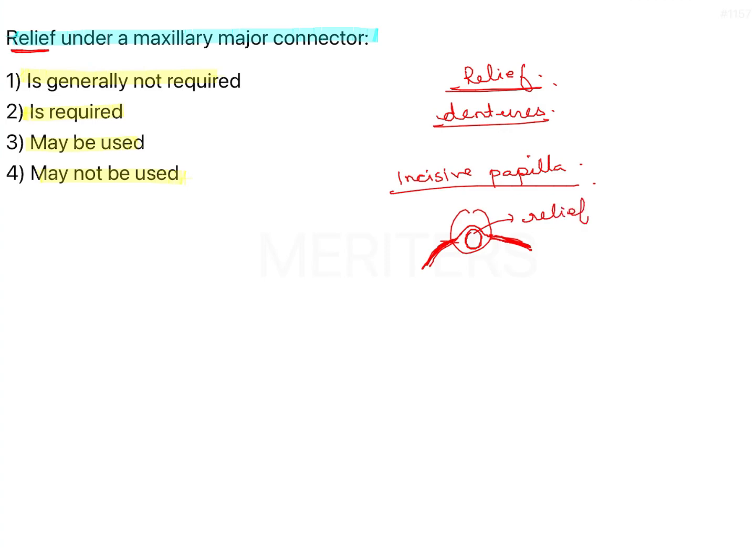So this is known as relief - you are not providing too much fitting on that structure. Now as we know, a maxillary major connector is supposed to be made up of metal. The purpose of the major connector is cross arch stabilization. It should be rigid, which is very important, and it should be fitting very well.